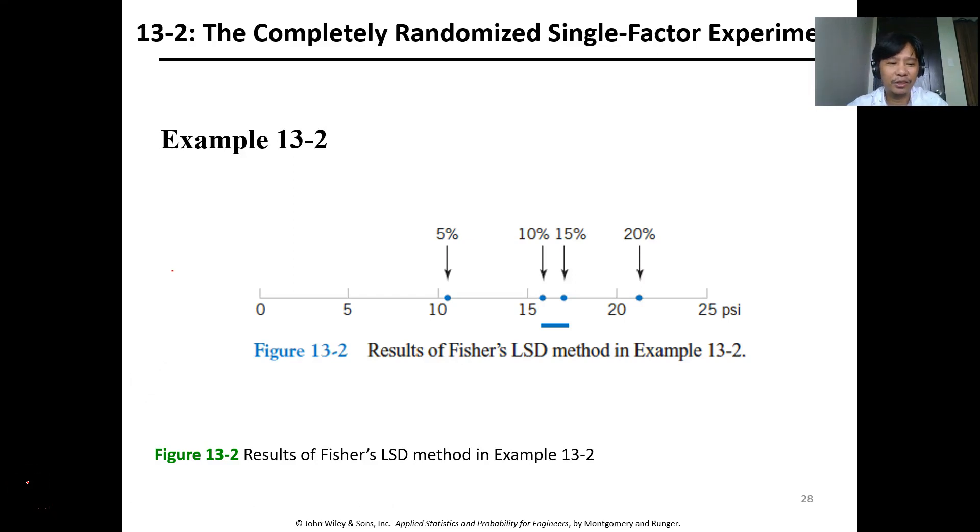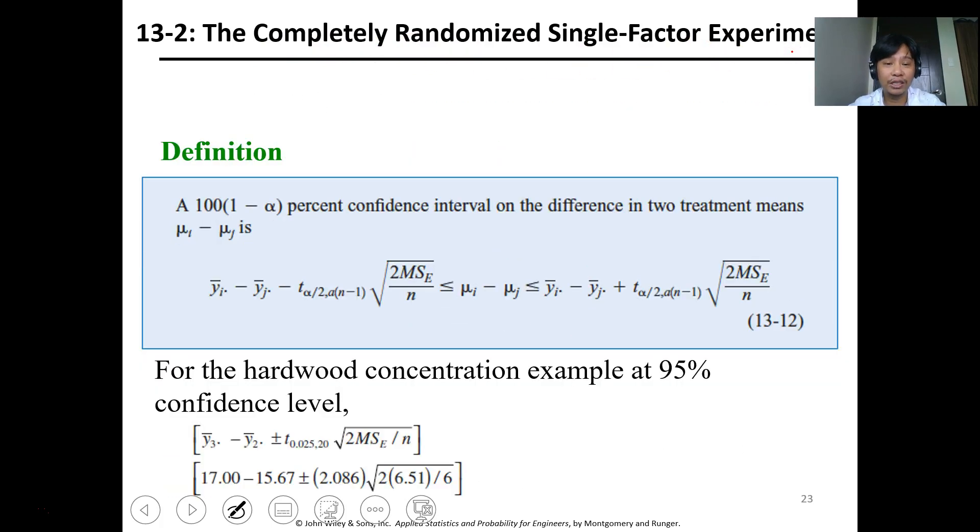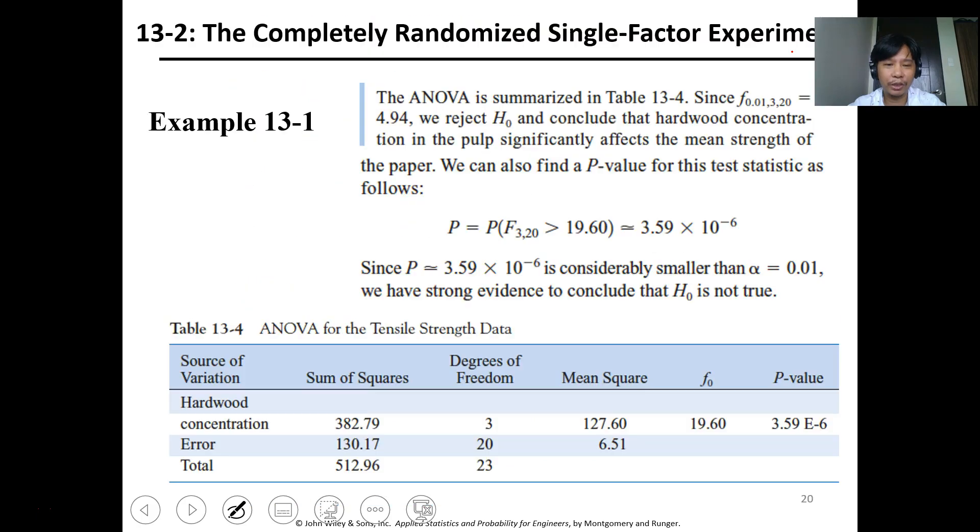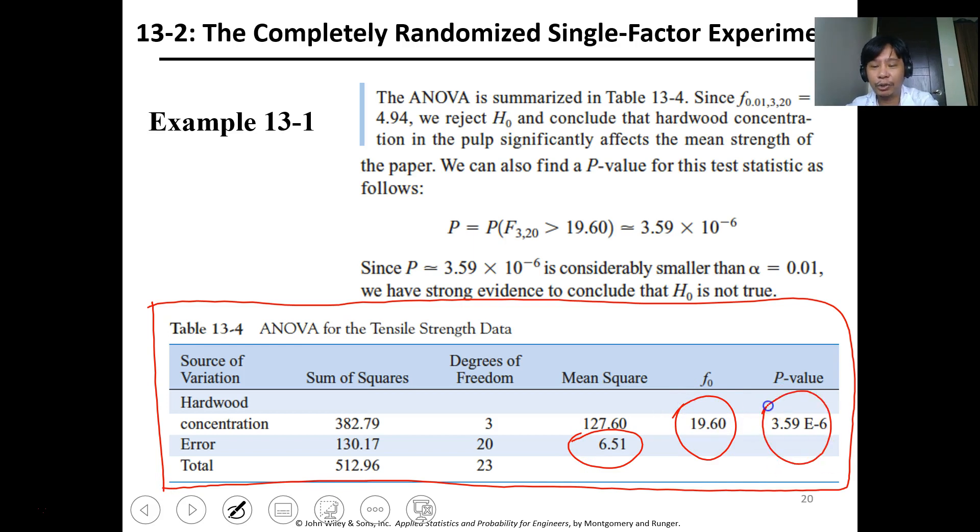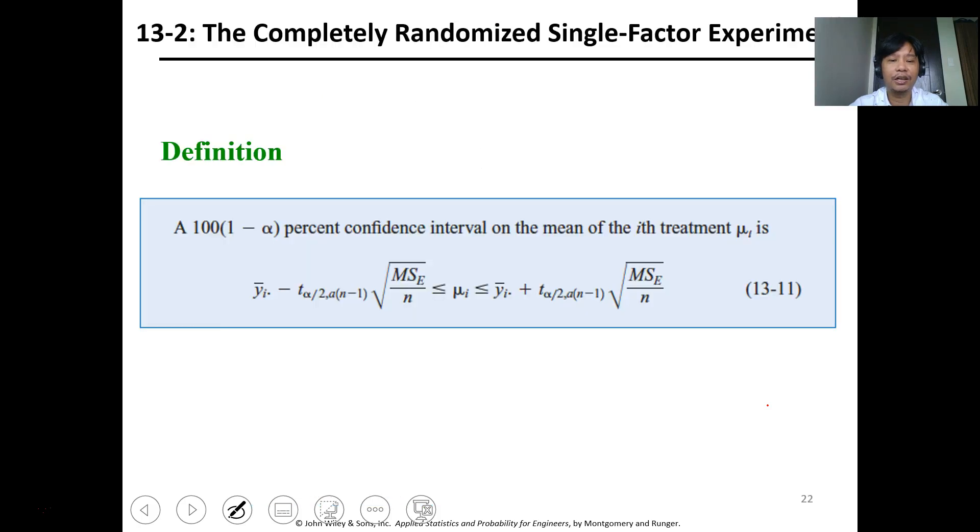Okay, hello everyone. We're here to continue our lesson with lesson 12, the design for experiment with a single factor. So we are discussing the completely randomized single-factor experiment where we utilize ANOVA. We have this table and from the table we have identified the variance, the F-O, and the p-value from your Excel generated data.